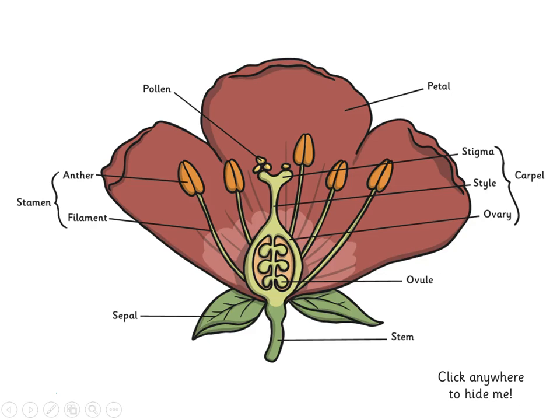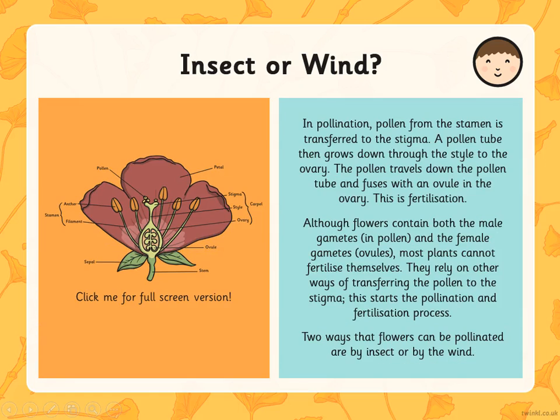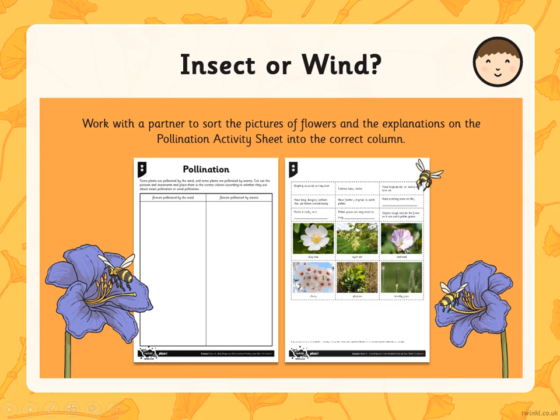Let's have a closer look at the parts of the flower. Pause the video and note down some of the keywords that you can see on the screen. In class you're going to consider insect or wind pollination and work with your teacher to consider how plants can be pollinated and fertilized.